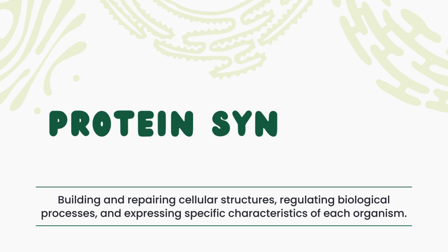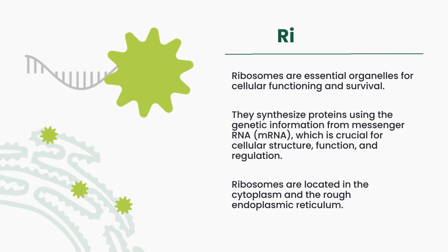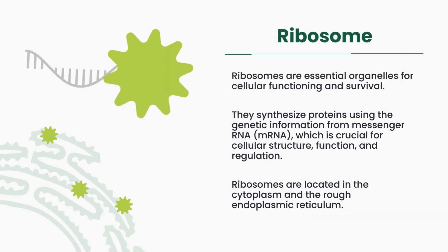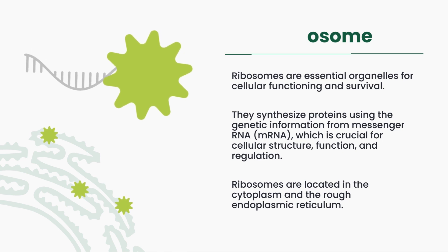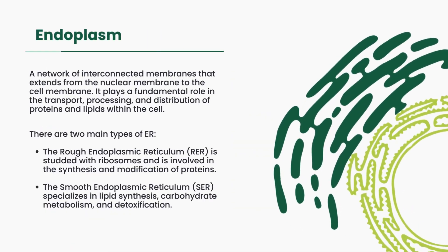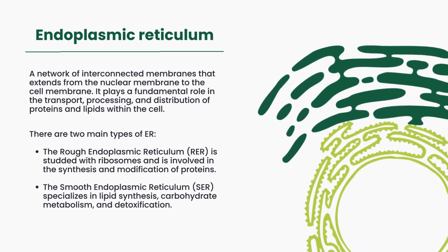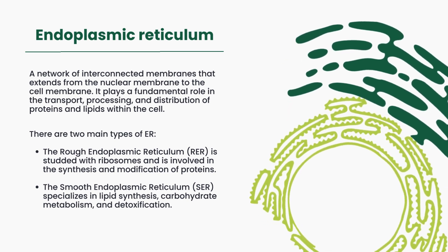Protein synthesis is essential for building and repairing cellular structures, regulating biological processes, and expressing specific characteristics of organisms. Ribosomes synthesize proteins using genetic information from messenger RNA (mRNA). They are crucial for cellular structure, function, and regulation. The endoplasmic reticulum is involved in protein and lipid synthesis, processing, and distribution. It includes the rough ER, with ribosomes, and smooth ER.